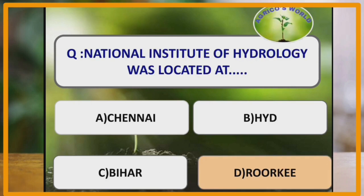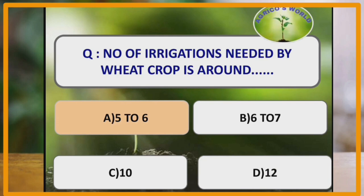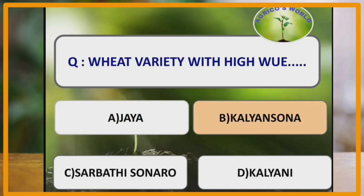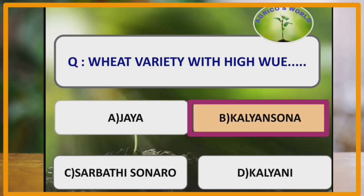National Institute of Hydrology is located at Roorkee, which is in Uttarakhand. Number of irrigations needed by wheat crop is around 5-6 times. Wheat variety with high water use efficiency is Kalyan Sona. Kalyan Sona is a wheat variety with high water use efficiency.